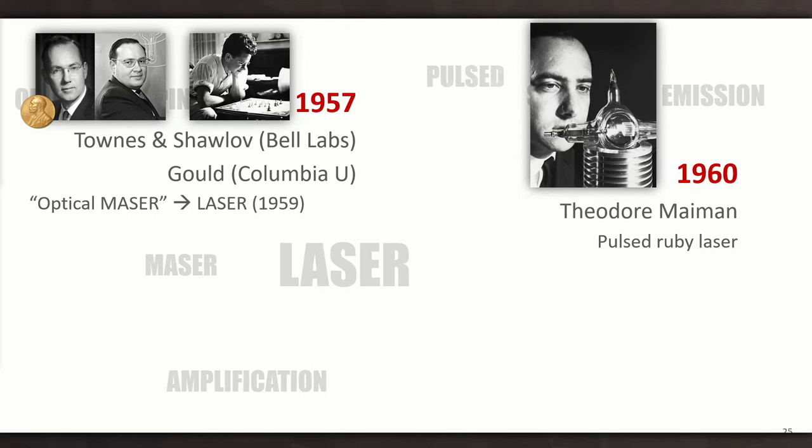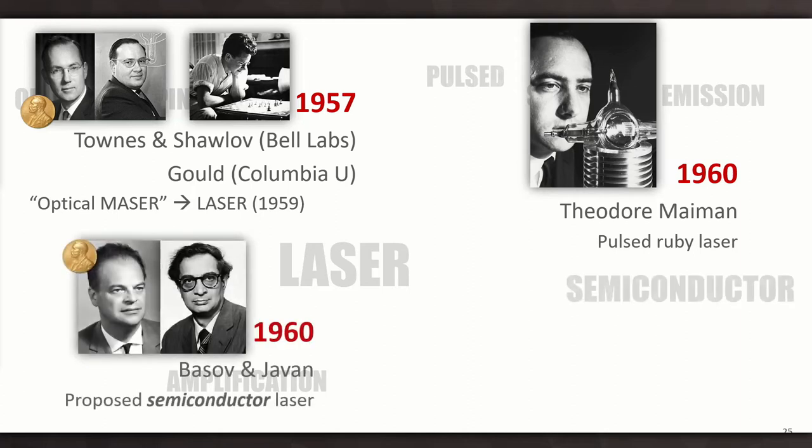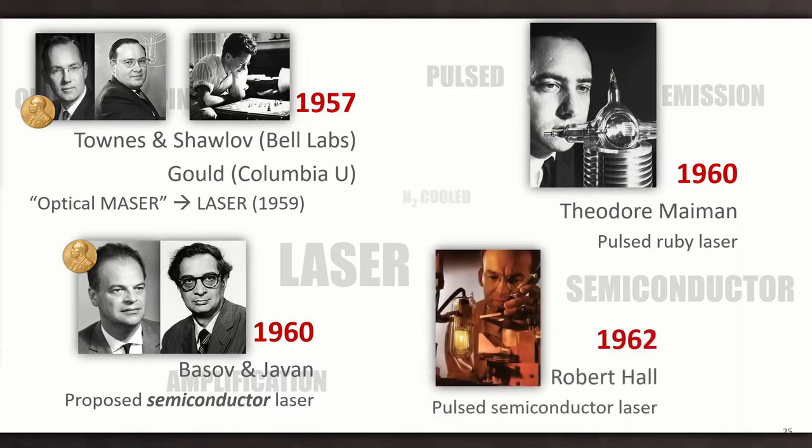His gain medium was a chunk of synthetic ruby crystal. And he used an old photographic flashbulb as the optical pump. Obviously, that is literally pulsed because every time you want to create a pulse of light, you have to put in a new flashbulb. Not very practical. So maybe by using different materials, we could get something a little bit more practical. Well, Basov and Javan in 1960, they proposed the semiconductor laser. So the gain material now is a solid-state semiconductor.